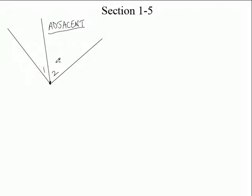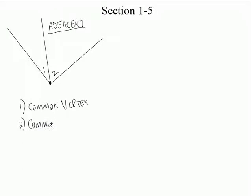In order for angles to be adjacent to each other, three things have to be true. First, they have to have a common vertex. Not every pair of angles with a common vertex are adjacent — they have to fulfill all three requirements. Second, they have to have a common side — meaning it's shared by both of them. Third, they must have no common interior points.